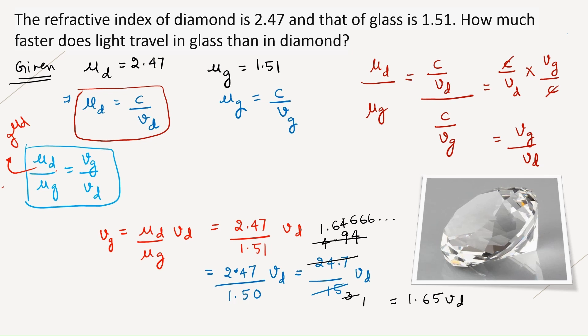Now let us write this very neatly. Our result is Vg equals 1.65 Vd. Now what does this mean? The question says, how much faster does light travel in glass than in diamond? Answer is, the light travels approximately 1.65 times Vd, because I have taken a small approximation there. That is it.